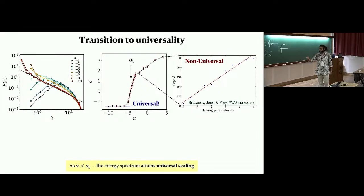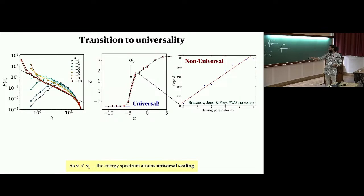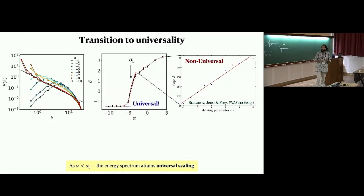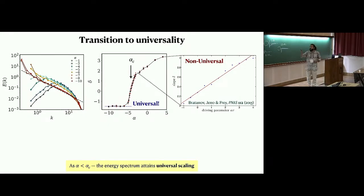There seems to be saturation in the spectral scaling — it does not change further beyond a certain point. You can extract the scaling exponent by fitting power laws to the low wave-number part of the spectra. There's a regime that is non-universal — that's what was known earlier. But beyond a certain alpha, there seems to be universal scaling. There appears to be a critical value of alpha beyond which there's almost a phase transition to this kind of scaling.